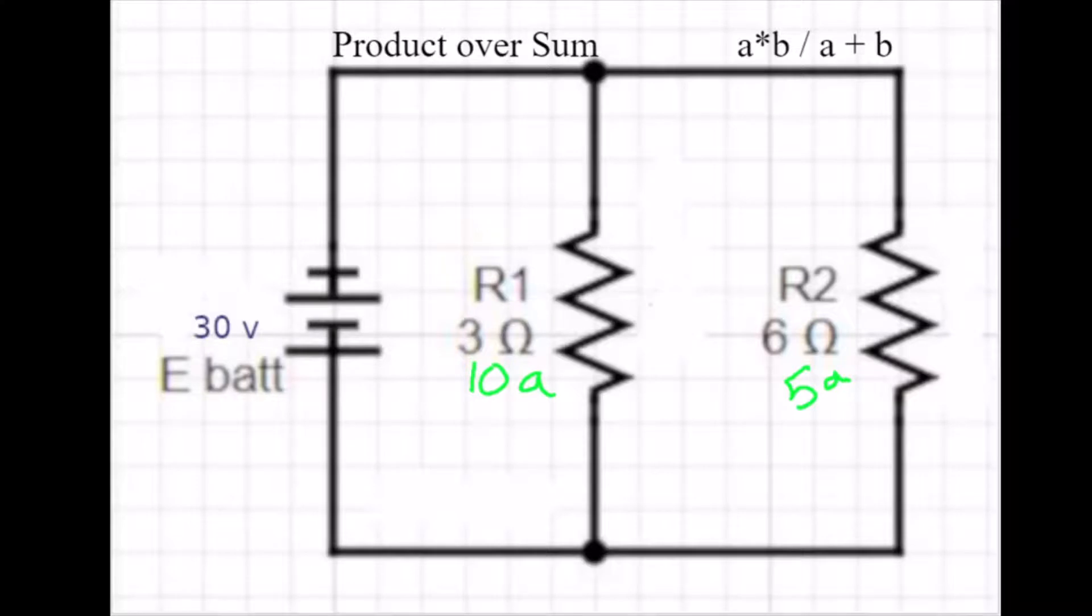So we have 10 amps at R1, 5 amps at R2. Now, if you remember back, what is going to be the amperage at the battery? Well, we know that coming out from here and returning again, don't forget it's a parallel circuit,